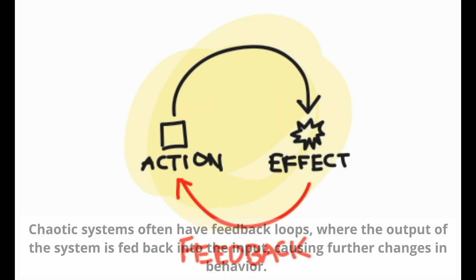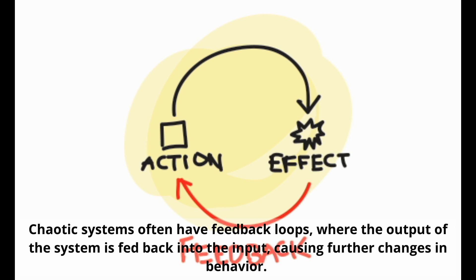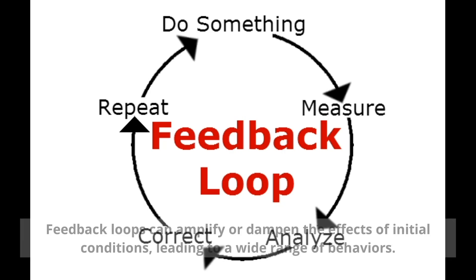Feedback Loops. Chaotic systems often have feedback loops, where the output of the system is fed back into the input, causing further changes in behavior. Feedback loops can amplify or dampen the effects of initial conditions, leading to a wide range of behaviors.